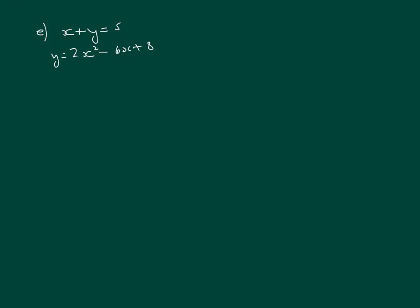For this last example, I'll label the equations 1 and 2. Neither variable is the subject of the formula, so we need to rearrange. We could say y equals 5 minus x or x equals 5 minus y. I want to substitute into the quadratic to avoid a messy expansion of y, so I'll use y equals 5 minus x as equation 3 and substitute that in.